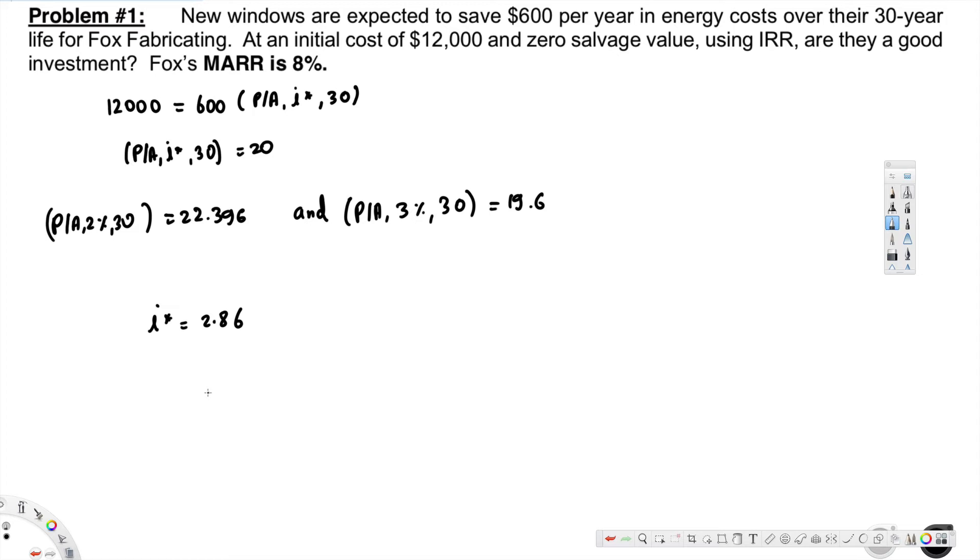Now this is less than Fox's MARR, that is 8%, so the windows are not a good investment. And that's how we do that. So we decide windows are not a good investment by calculating this i*, and if that is less than 8%, it's not a good investment.